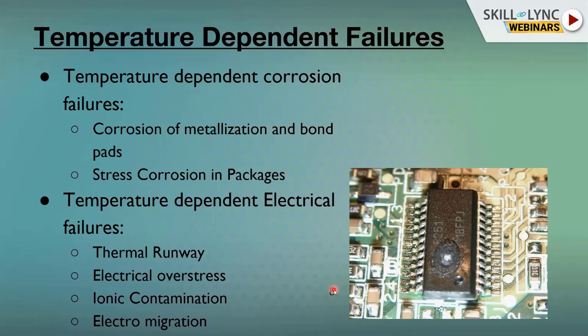The first type of temperature-dependent electrical failure is thermal runaway, which is a very interesting phenomenon. As we know, an increase in temperature will increase the resistance of a conductor. At high temperature, resistance increases, which further increases the temperature, which again increases the resistance — the process continues until the component fails. So there are two interacting factors: temperature increases resistance, and resistance increases temperature, forming a cyclic failure process.